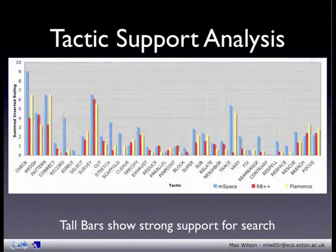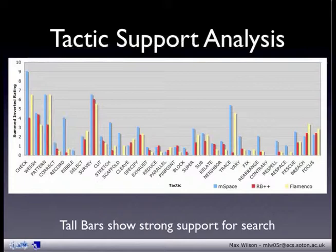Second, you can do analysis by tactic, and you get a graph a bit like this. Again, there are some pretty clear things straight away. For example, none of the browsers support the tactic called 'contrary', which shows you everything but the item we selected. An example of this would be to say: I'd like to see all the computers available that aren't made by Dell.